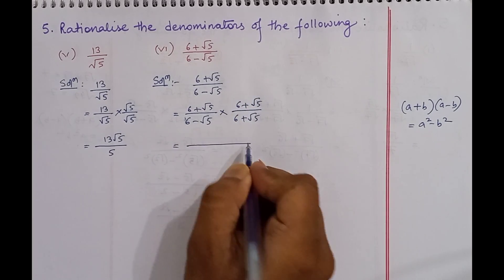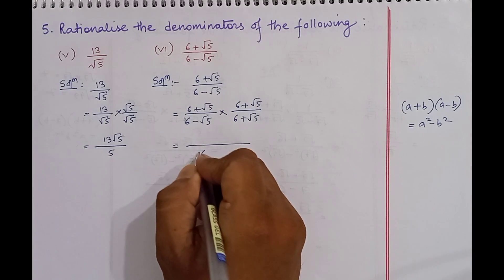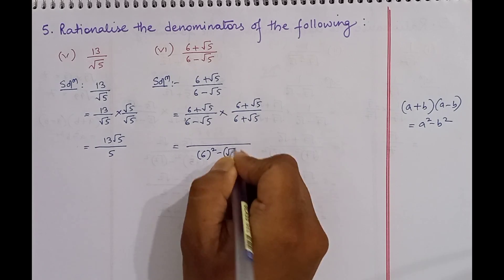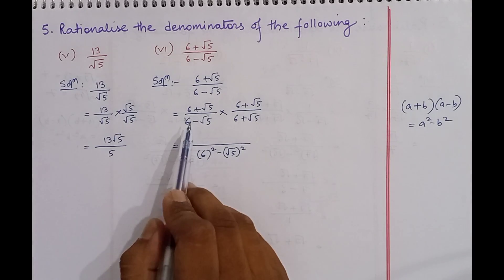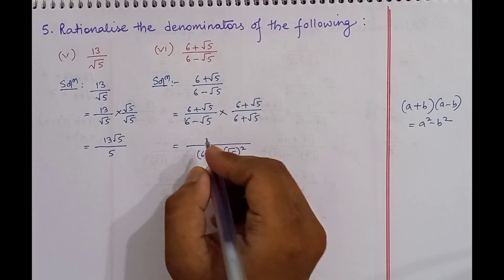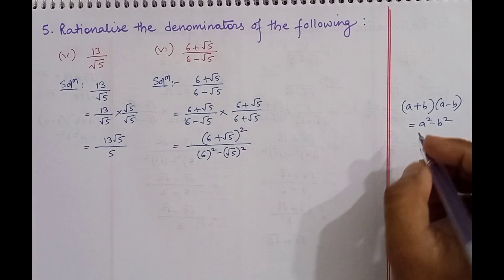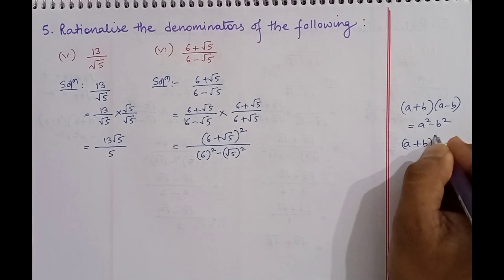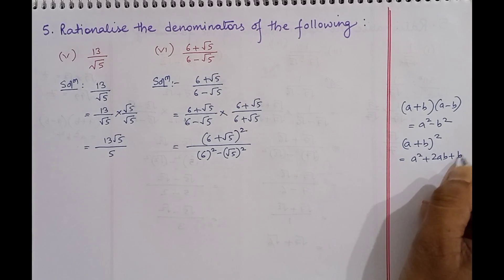The denominator will be represented as 6 whole square minus root over 5 whole square. For the numerator, we have 6 plus root over 5 into 6 plus root over 5, which is 6 plus root over 5 whole square. Here we will use the (a plus b) whole square identity, which equals a square plus 2ab plus b square.